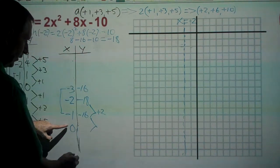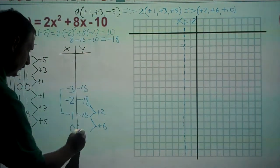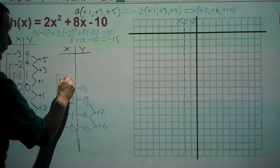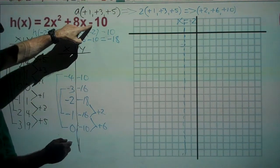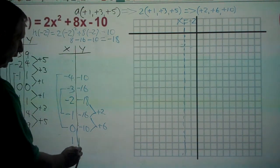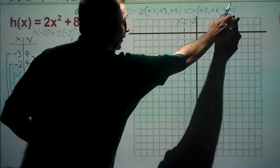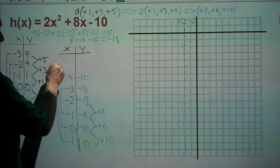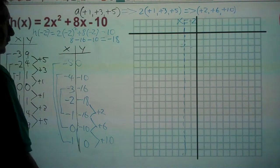For input one, the next step is plus ten: negative ten plus ten equals zero. So input one gives output zero, and by symmetry input negative five also gives output zero. Now we graph the function with vertex at (−2, −18), a vertically stretched or horizontally compressed parabola because of the a value of two.